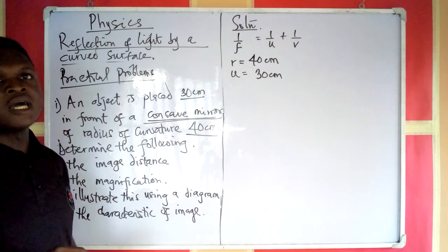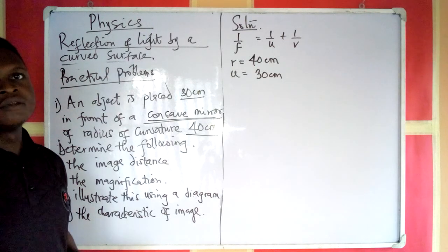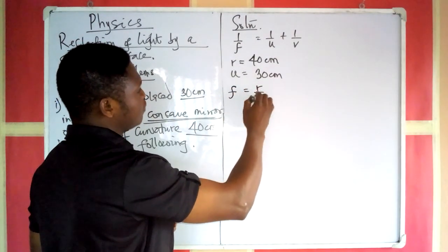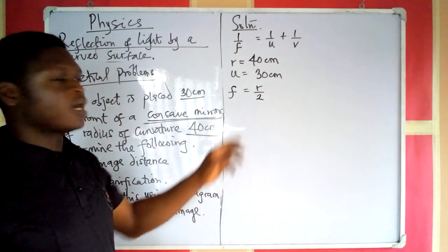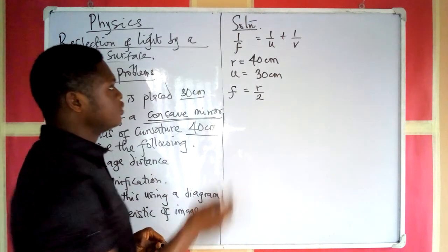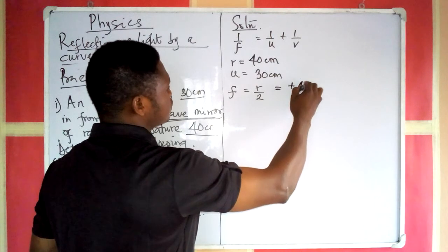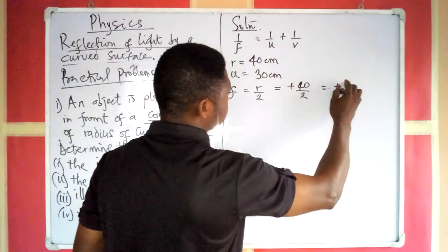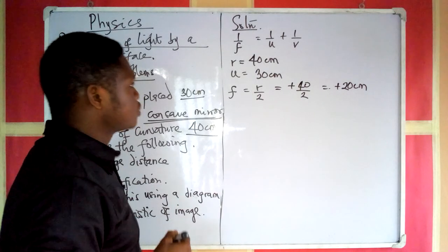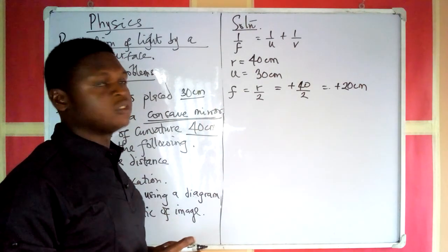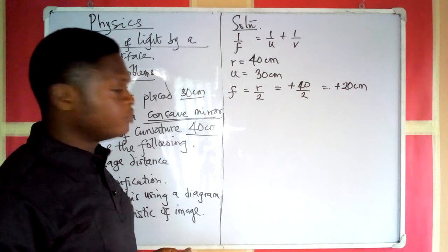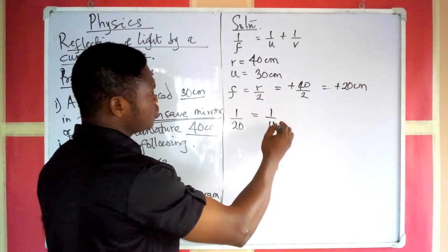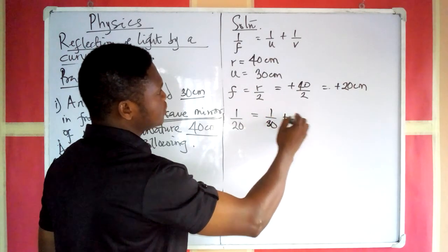Let us recall the relationship between f and r: f equals r over 2. So the focal length equals half the radius of curvature. Our f is positive 40 over 2, positive because it is a concave mirror, giving us positive 20 cm. Having obtained that, we can substitute into the mirror formula: 1 over 20 equals 1 over u, where u is 30, plus 1 over v.